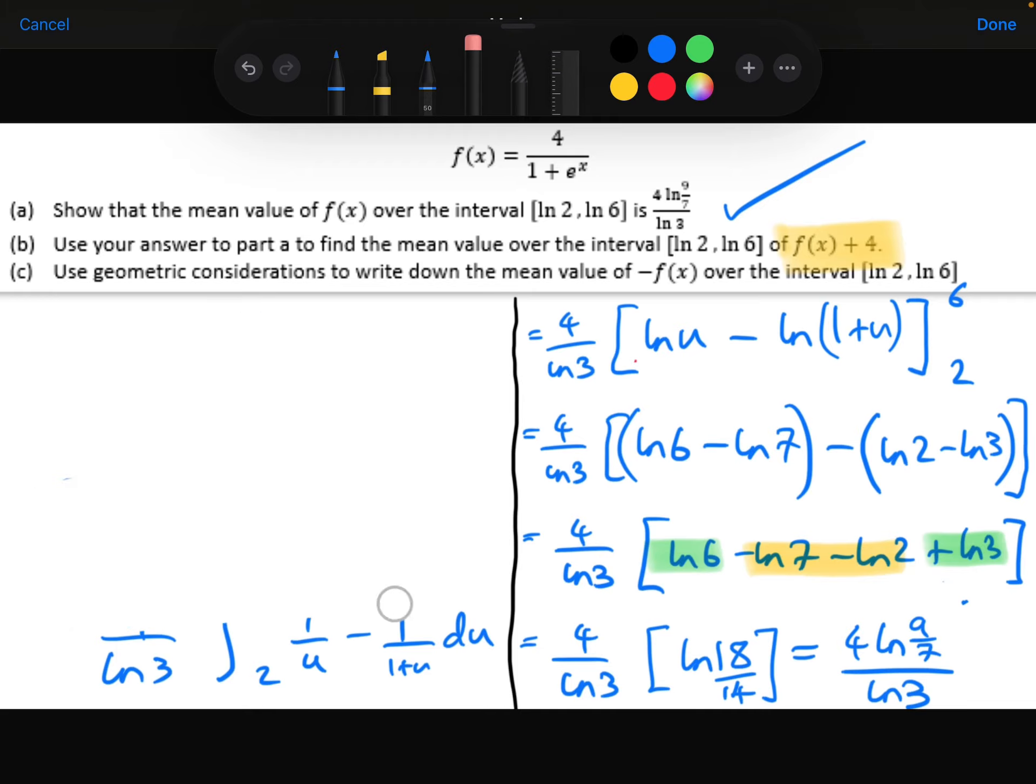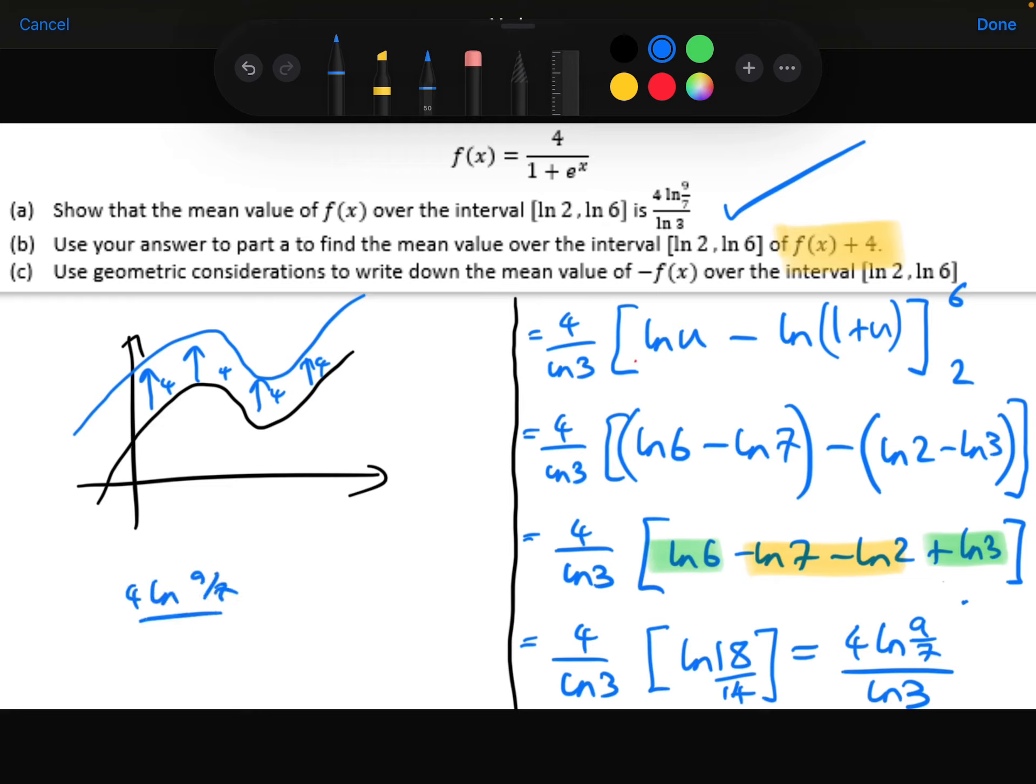So think about what that would do to the mean value. What does the plus 4 do? Well, if I have f(x) like this, f(x) plus 4 is just 4 squares higher. The whole graph has just moved up 4. So all that would do then is just add 4 to the mean value. So it's just going to be 4 ln 9 over 7 over ln 3 plus 4. If every single data point moved 4 squares up, then the mean is going to move 4 squares up.